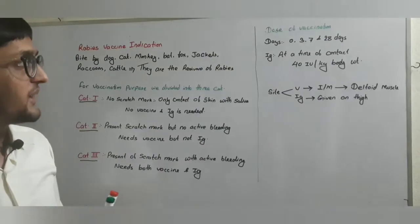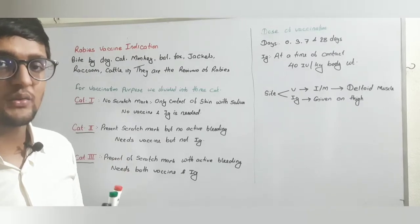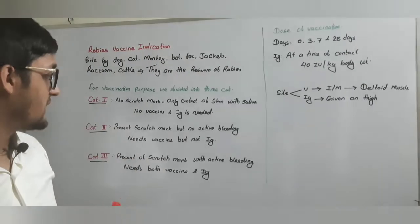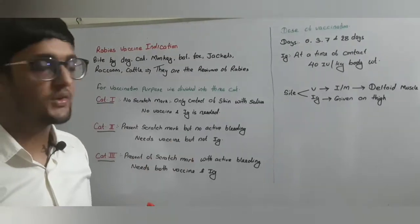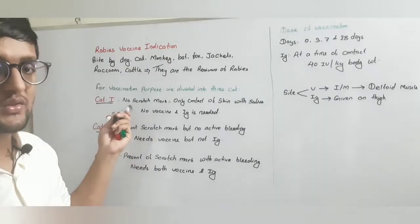Now, how many doses of the vaccine is required and in which day we will give the vaccine and at which time we will give the immunoglobulin. In category one, no need of the vaccine and no need of immunoglobulin.